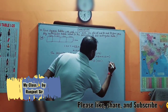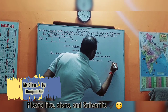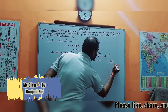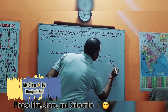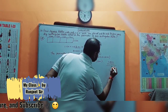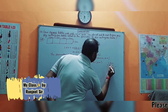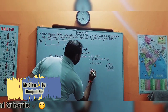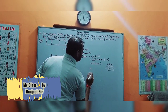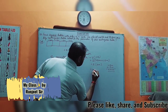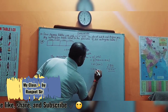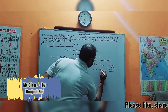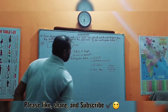4.8 meter plus 1.2 meter: 8 plus 2 is 10, carry 1, 4 plus 1 plus 1 is 6 — so 6 meters. Then multiply 2 into 6, we get 12 meters. 12 meters is the perimeter of the rectangular table, and this is the answer.